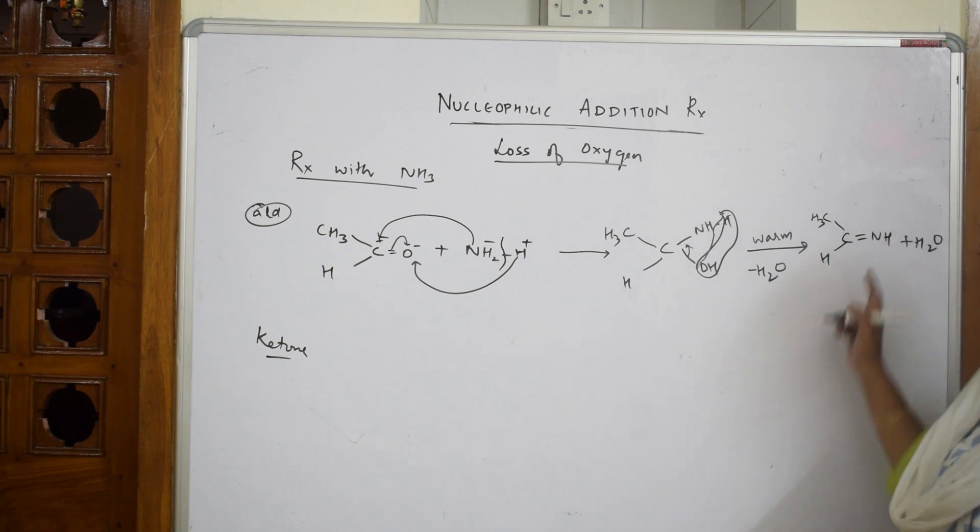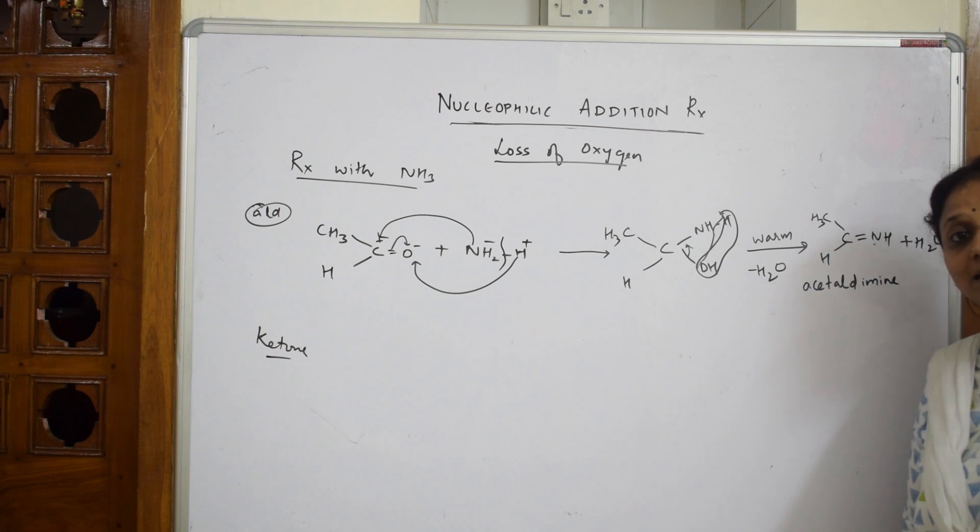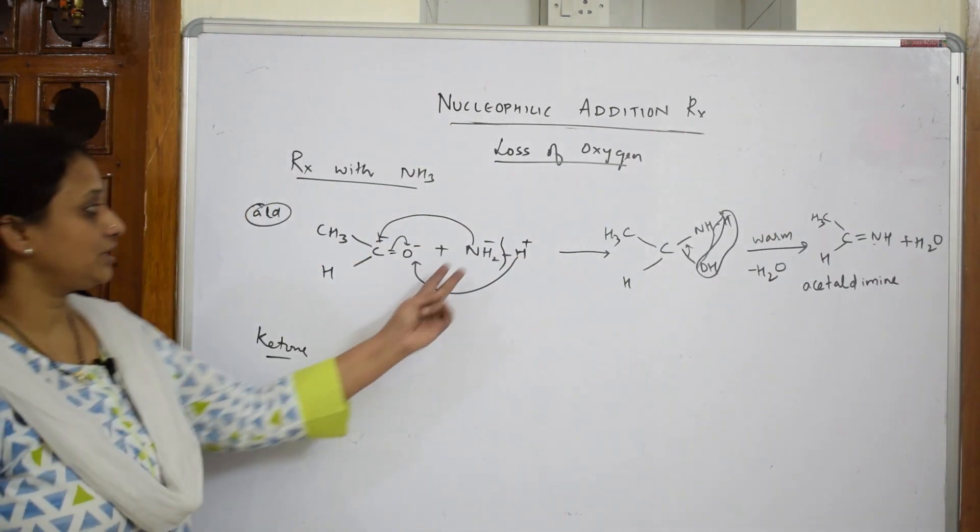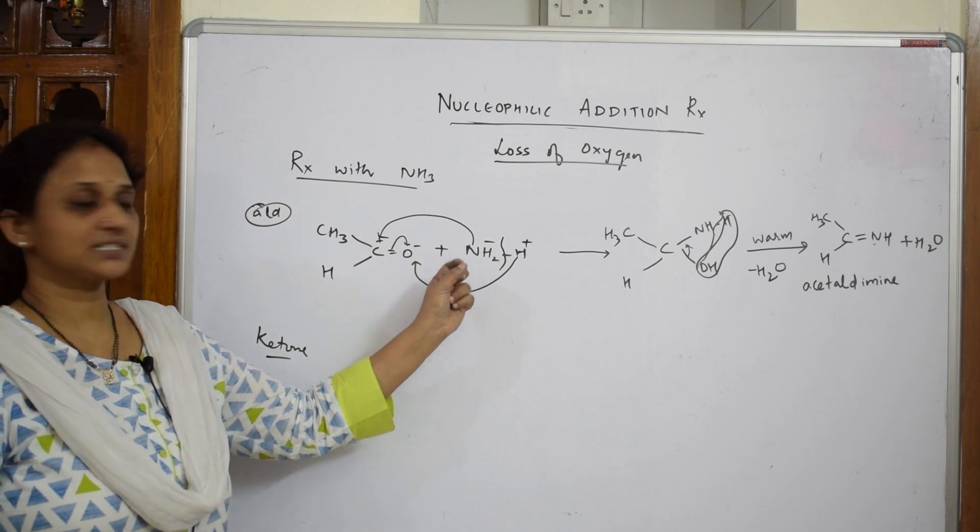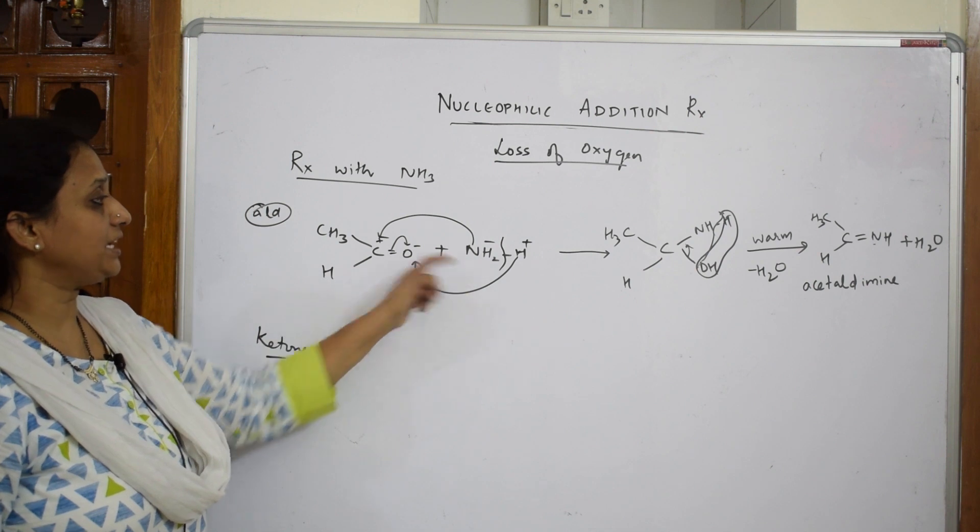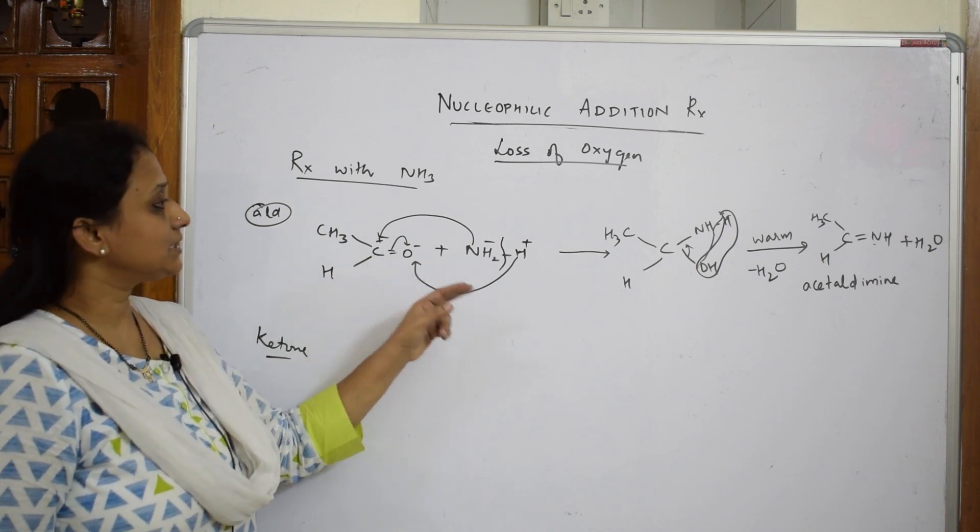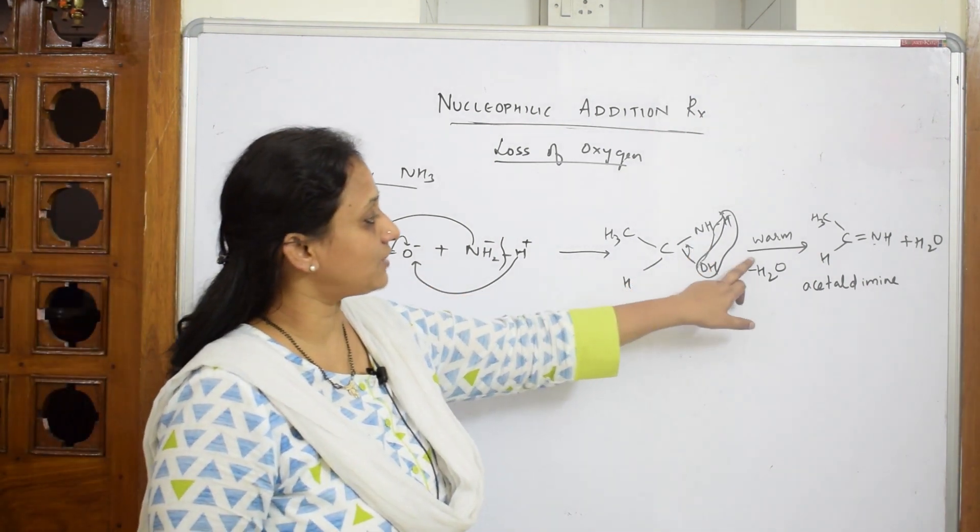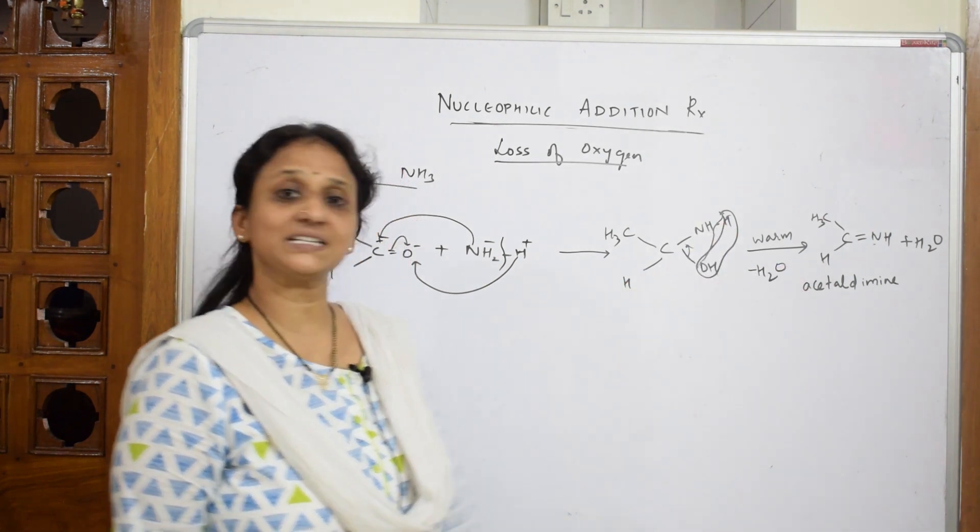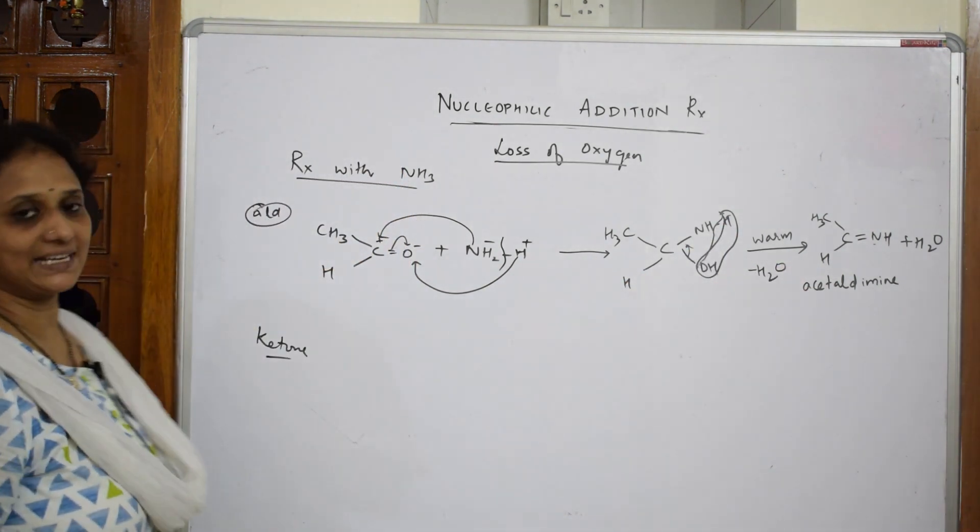What is this compound? This is called acetaldehyde amine. Remember this. So what did we do? We took ammonia, written both the cation and anion, shown the attack of amine group to carbonyl, and after warming the reaction, loss of water forms acetaldehyde amine. Amine means NH.